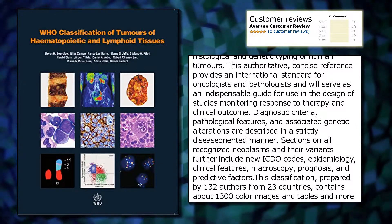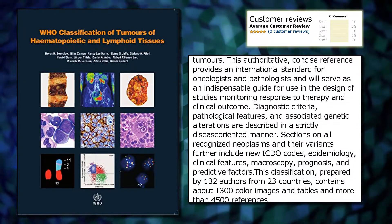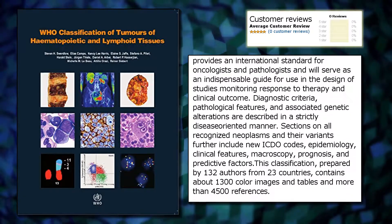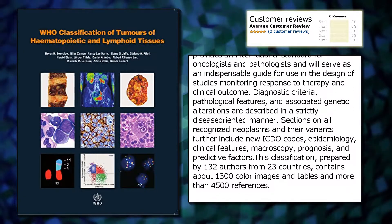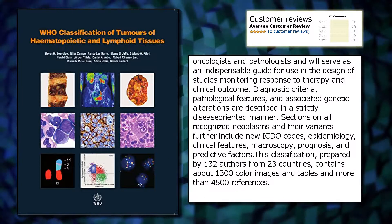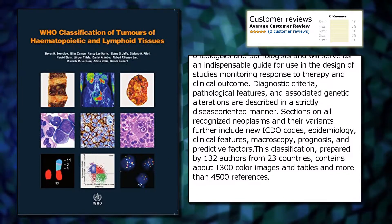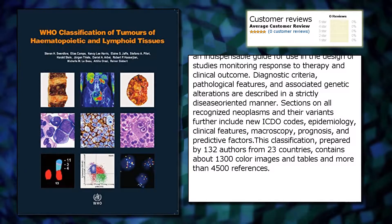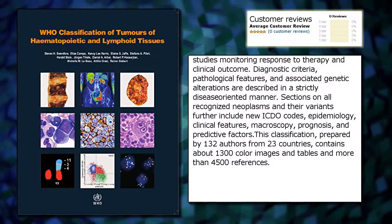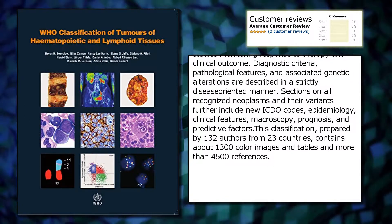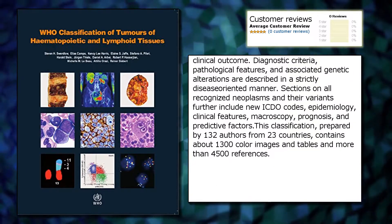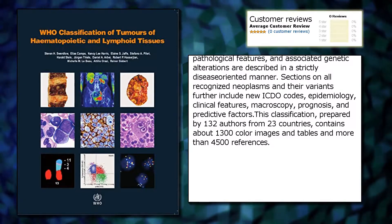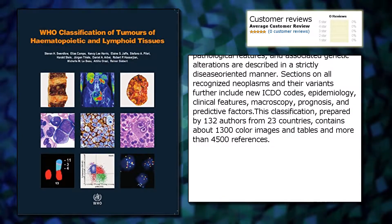Diagnostic criteria, pathological features, and associated genetic alterations are described in a strictly disease-oriented manner. Sections on all recognized neoplasms and their variants further include new ICD codes, epidemiology, clinical features, macroscopy, prognosis, and predictive factors.